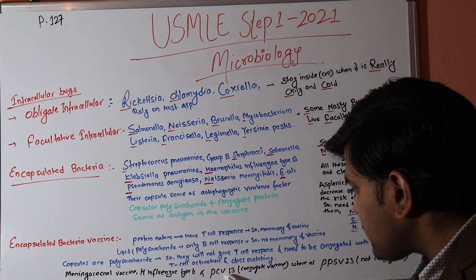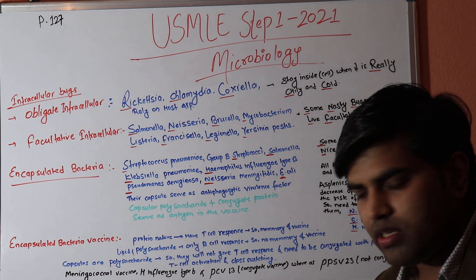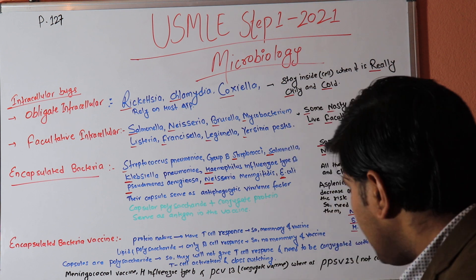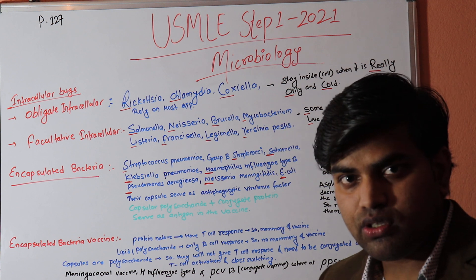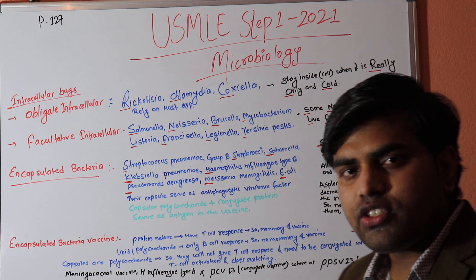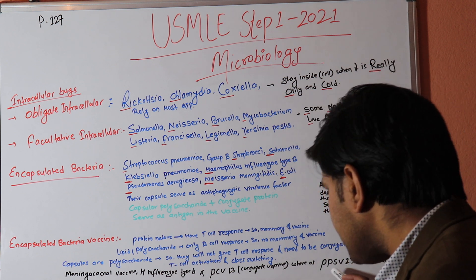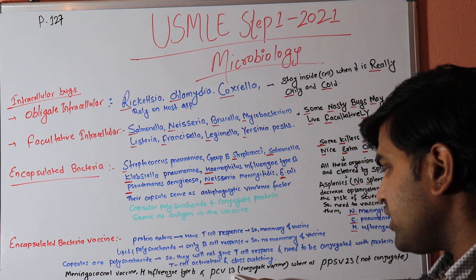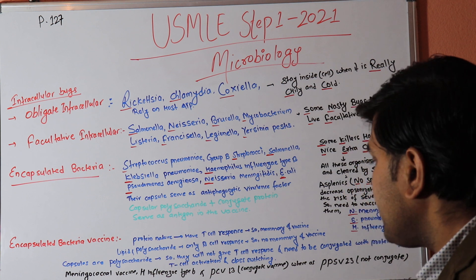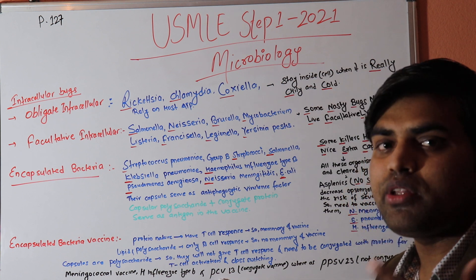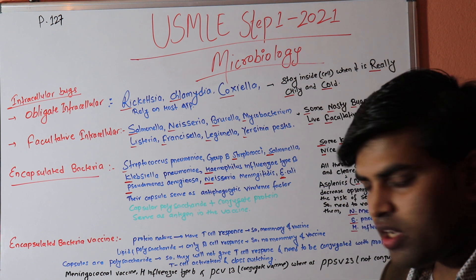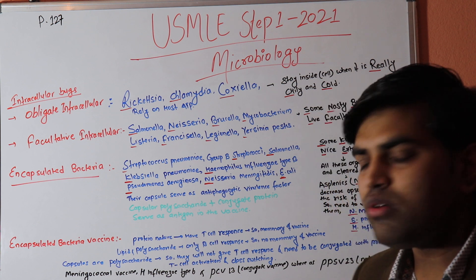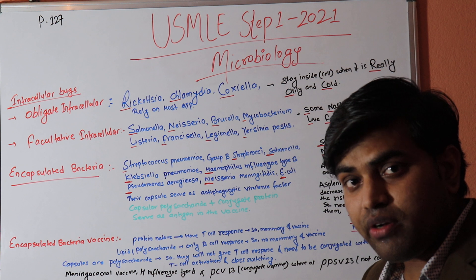The difference between PCV13 and PPSV23: PCV13 is a conjugate vaccine covering 13 serotypes, while PPSV23 is a polysaccharide vaccine covering 23 serotypes. Although PPSV23 covers more serotypes, PCV13 produces long-lasting memory cells due to its conjugated protein, giving durable immunity. PPSV23 provides broader coverage but only short-term immunity. PCV13 is given to children — although it covers only 13 serotypes, it induces memory cell formation.